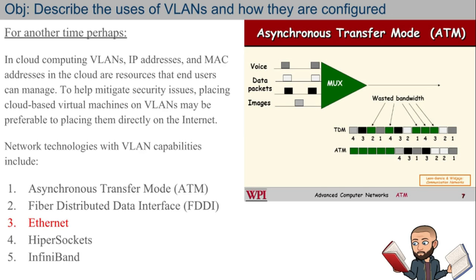Getting back on topic: in cloud computing, VLANs, IP addresses, and MAC addresses in the cloud are resources that end users can manage. To help mitigate security issues, placing cloud-based virtual machines on VLANs may be preferable to placing them directly on the internet — meaning on a server that's not separated into a VLAN.